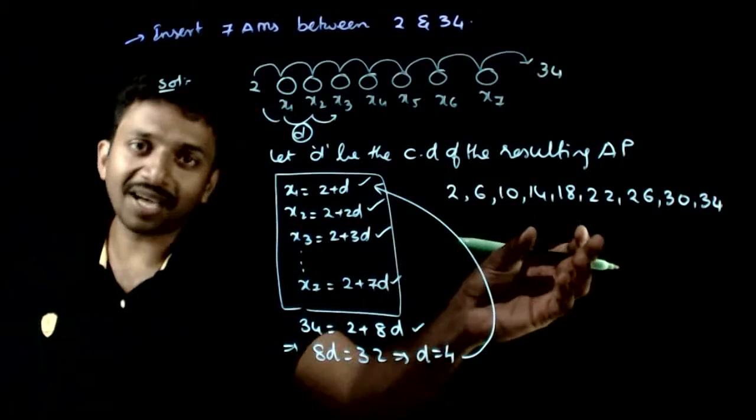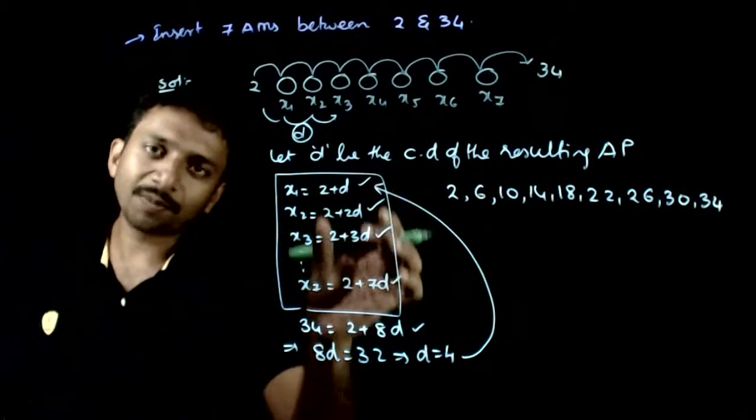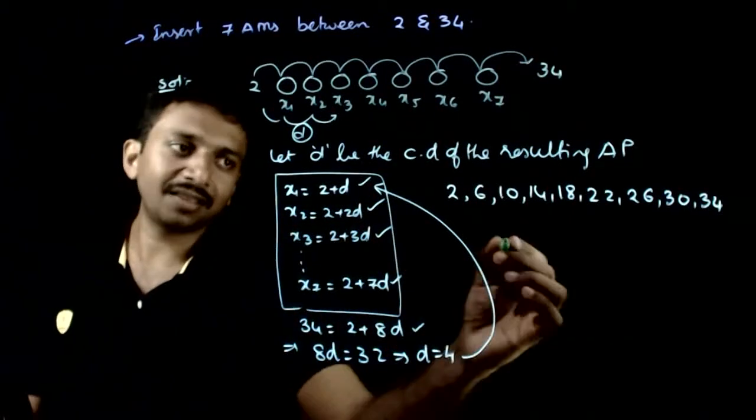So 6, 10, 14, 18, 22, 26, 30 are the 7 arithmetic means between 2 and 34. Now, next time when we do the exam, we can do all this.